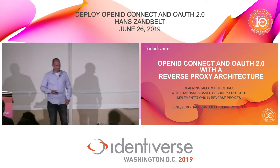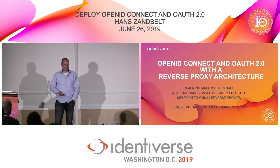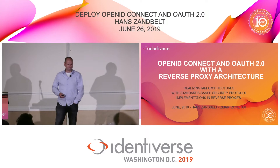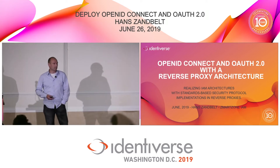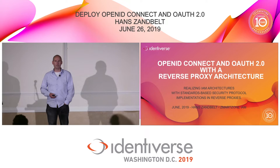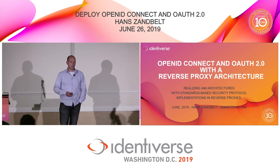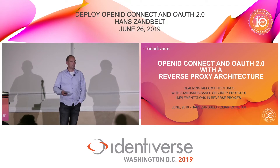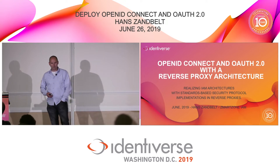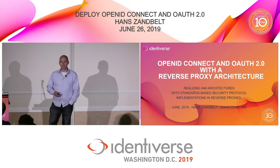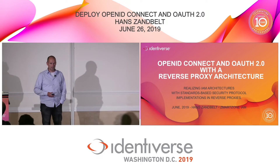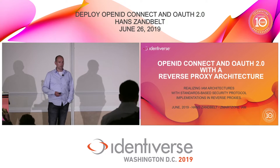Thank you, Vittorio. That was a great introduction — never had one like that. So I'm running a business that concentrates on developing and supporting open source. The open source components that I develop and support can be used in a reverse proxy architecture to implement OAuth and OpenID Connect. I want to talk today about that paradigm, that concept, and discuss the options you have there — why you would do this, what the advantages are, what the disadvantages are, and what implementation options you have.